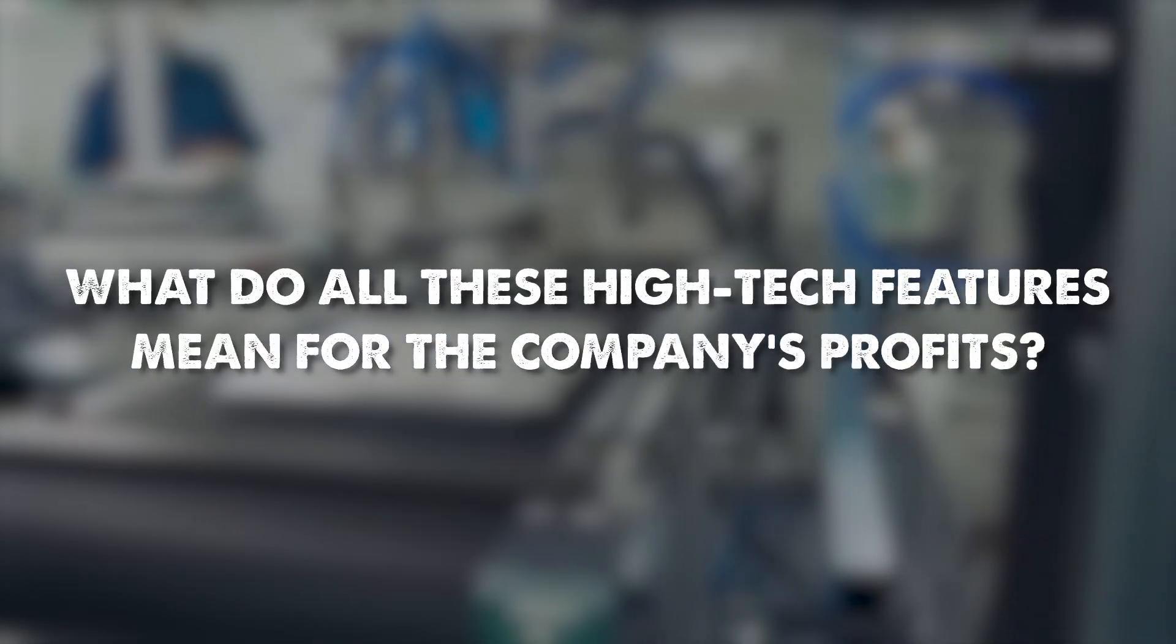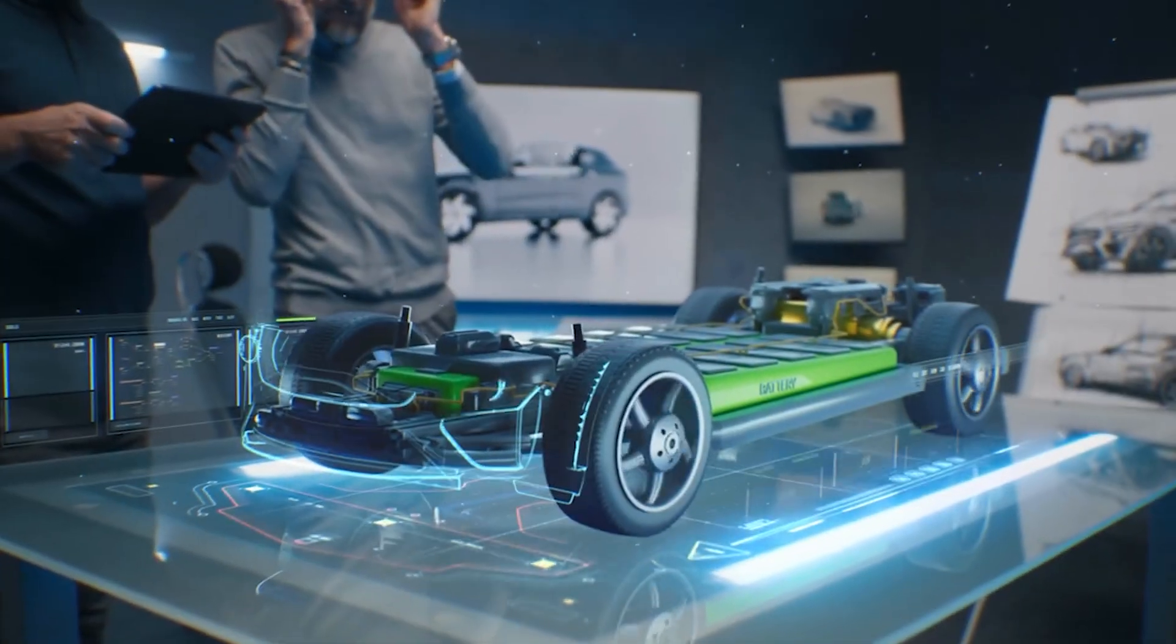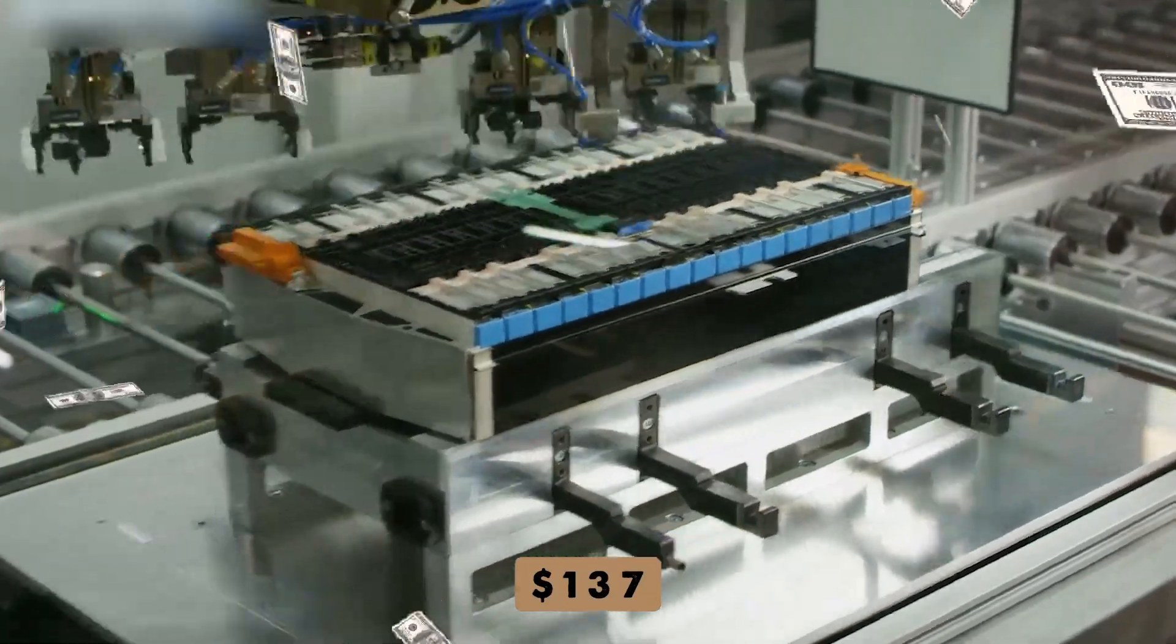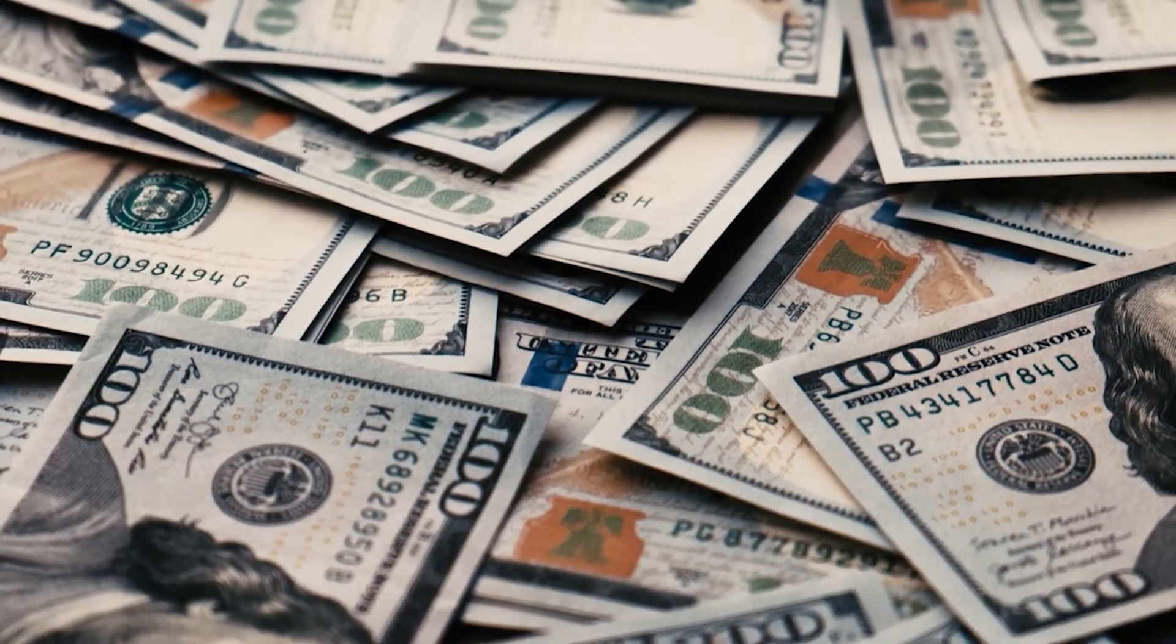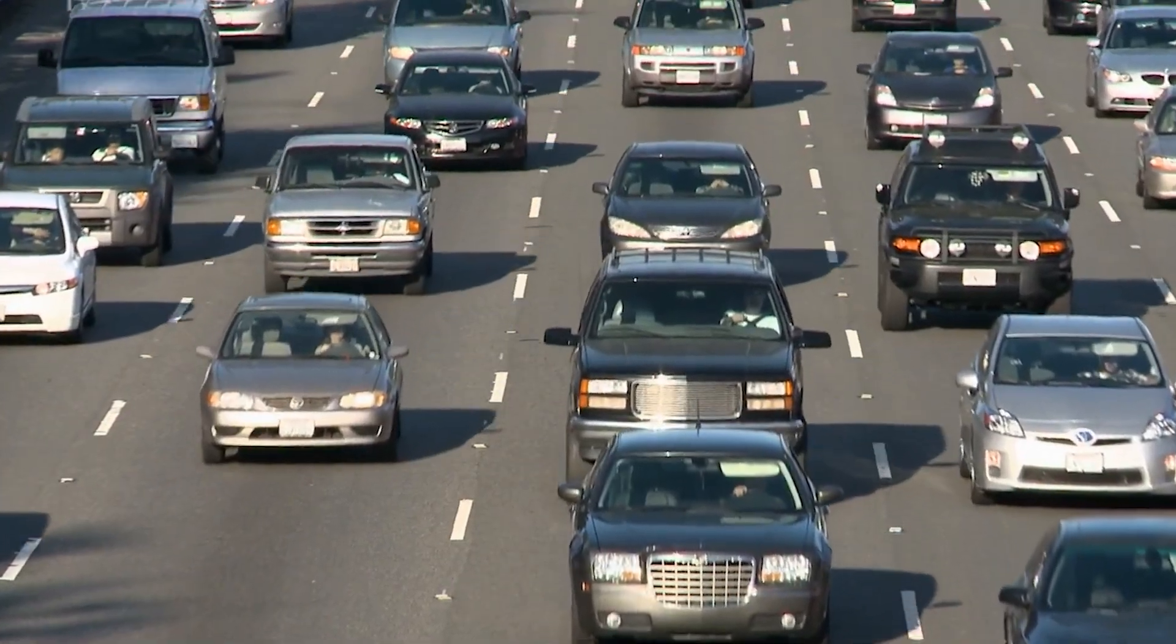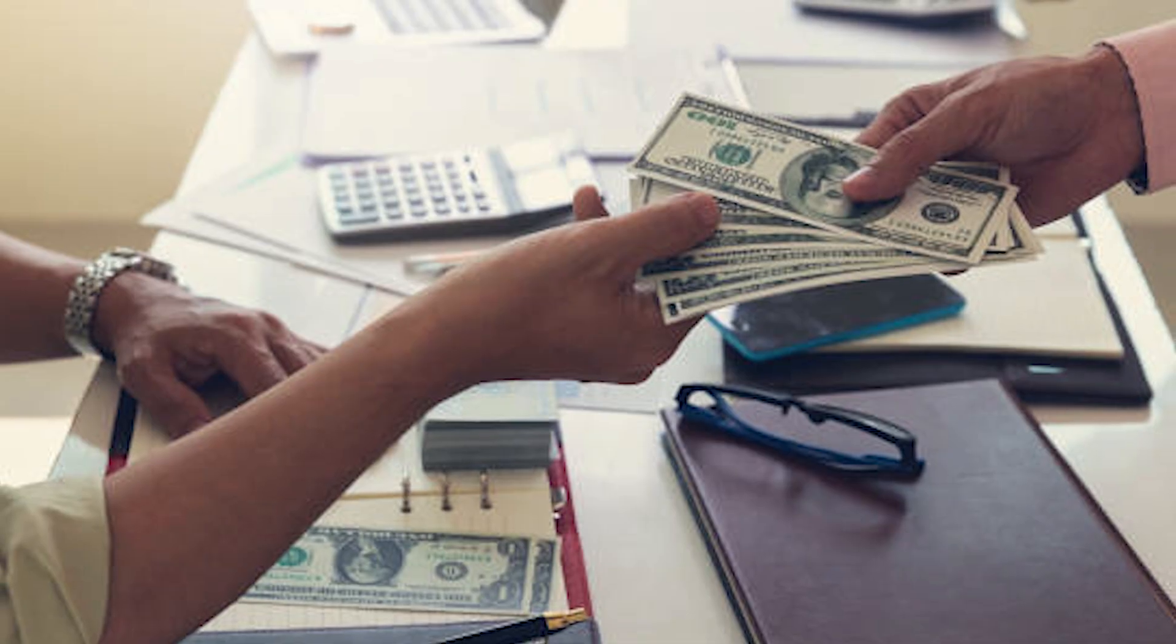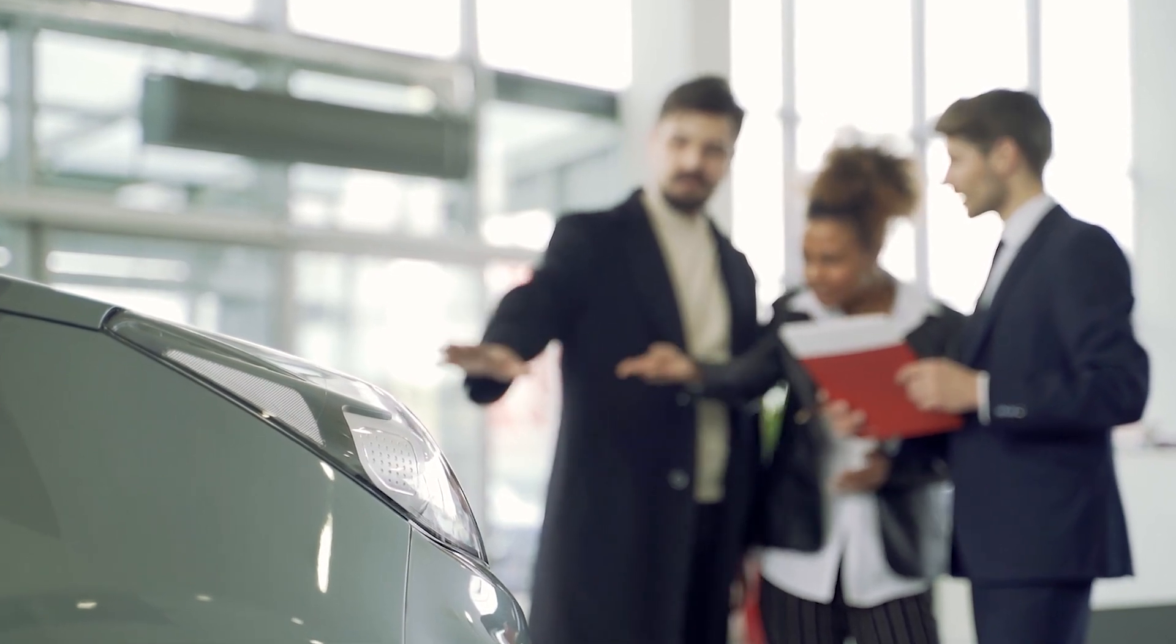What do all these high-tech features mean for the company's profits? Right now, the average cost of an electric vehicle battery is about $137 per kilowatt-hour. However, experts at Bernstein Research believe that Samsung's advanced manufacturing methods could lower that price to just $89 per kilowatt-hour when produced at large scale. This means that each electric vehicle could become around $3,600 cheaper, making them just as affordable as gasoline-powered cars, even without government subsidies. This drop in price could be a game-changer, pushing electric vehicle adoption to new heights and completely reshaping the auto industry.